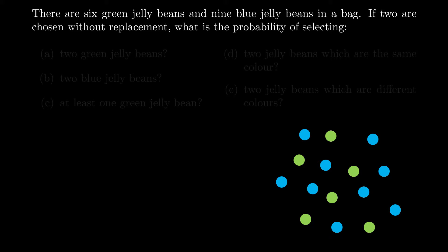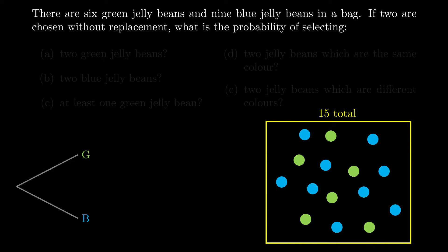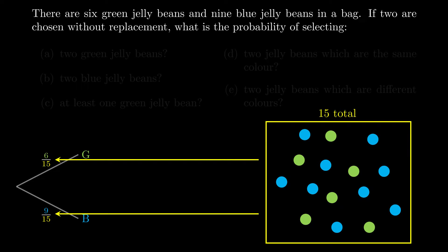When I take my first jelly bean, it's going to be either green or blue — only two possibilities. Previously when we did tree diagrams, every outcome was equally likely, but this time that's not the case because there are more blue jelly beans. So it's helpful to label each branch with the probability of selecting that outcome. With six greens and nine blues, there are 15 total, giving probabilities of 6/15 for green and 9/15 for blue.